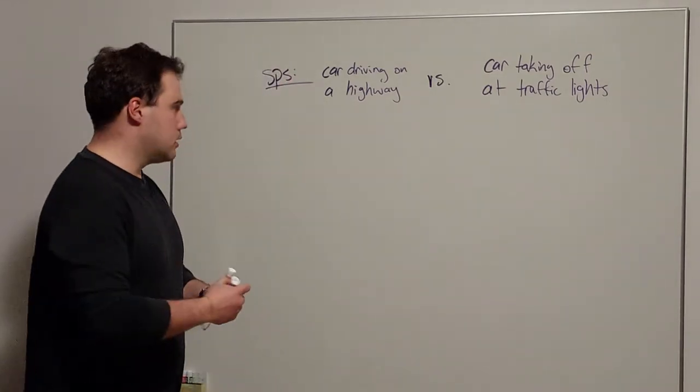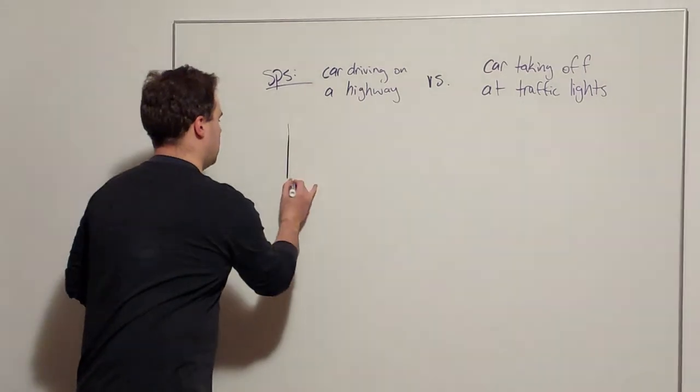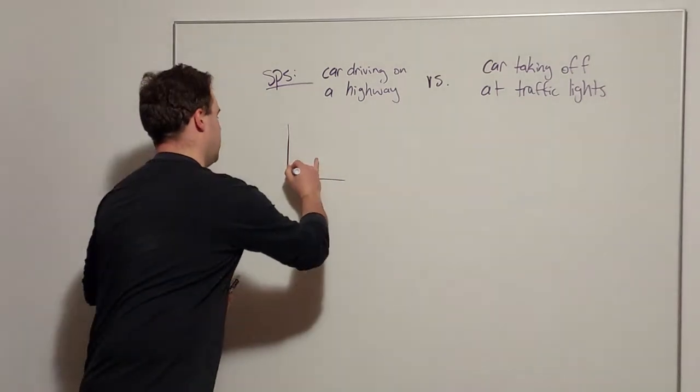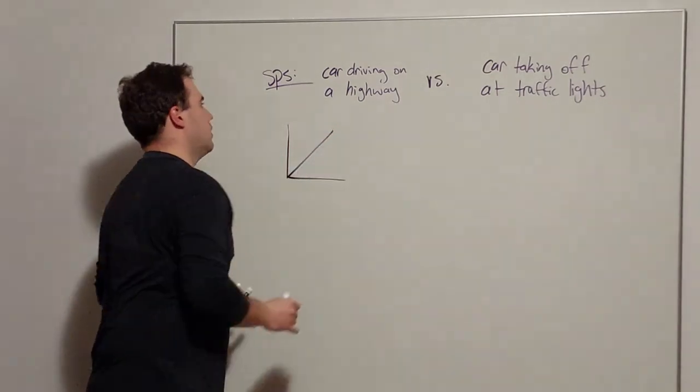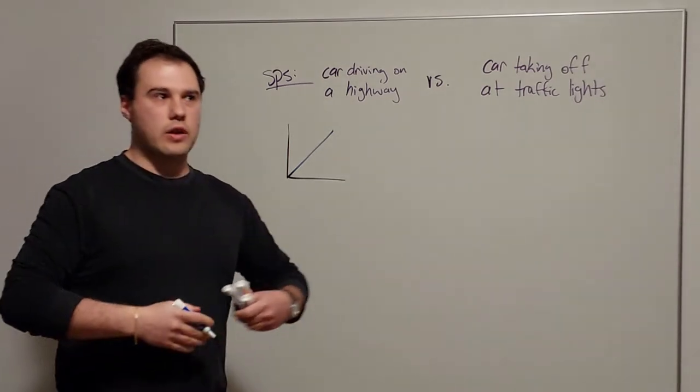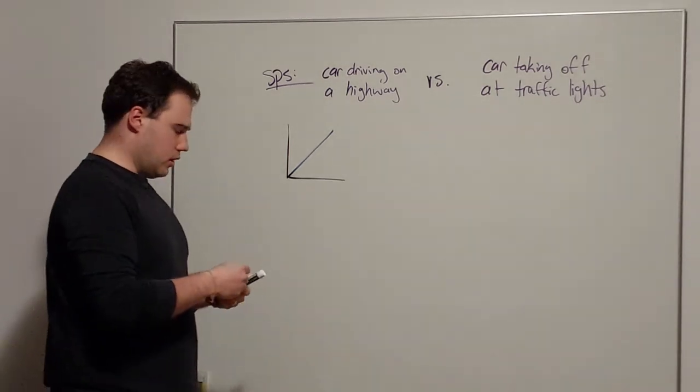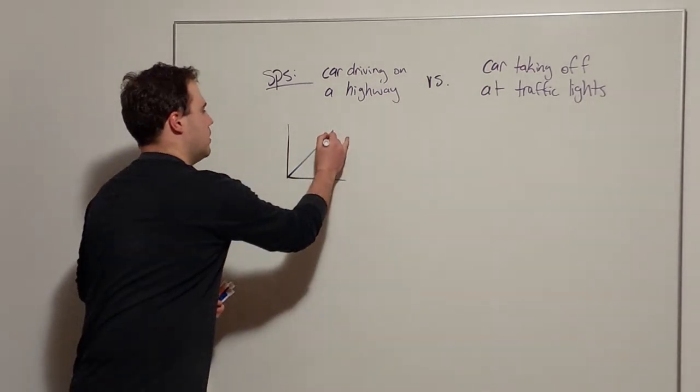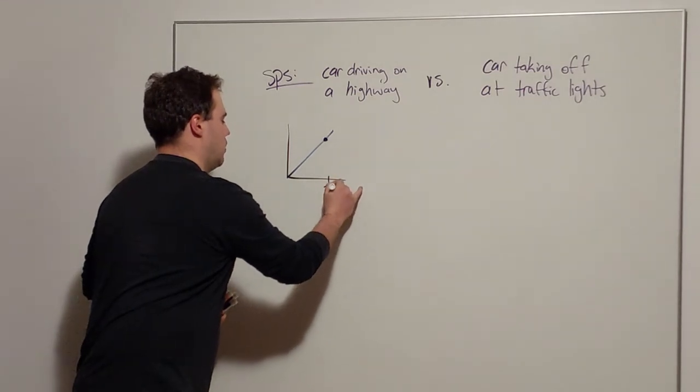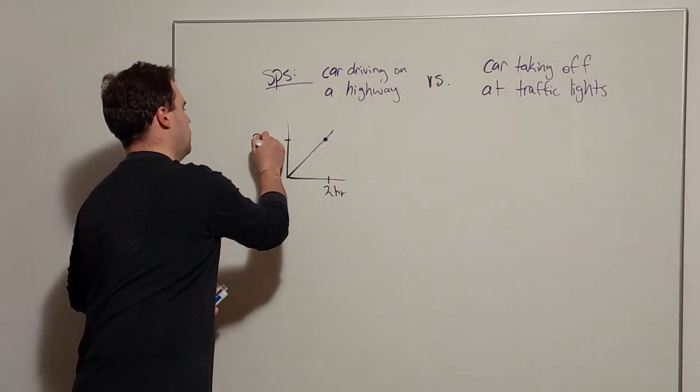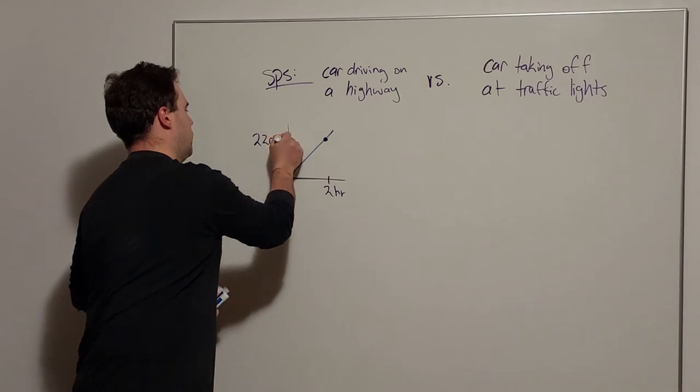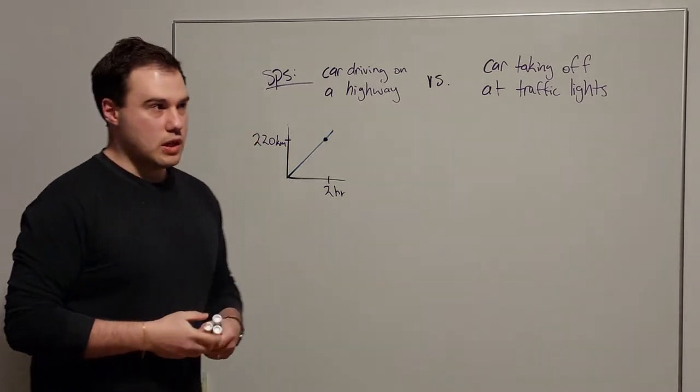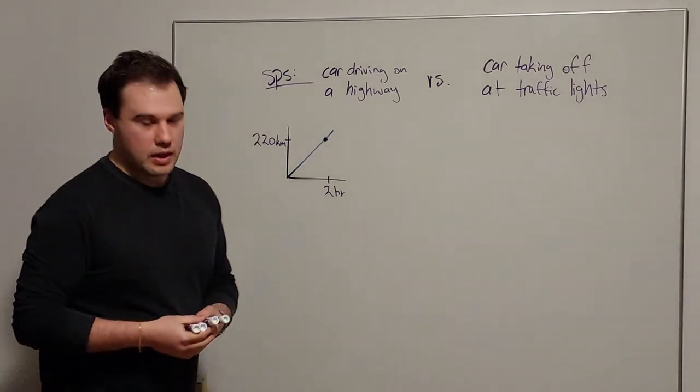Alright, so let's think of what each of these contexts might look like graphically. So here we have a distance versus time graph. For our car driving on the highway at a constant speed, it's going to be a straight line over time where maybe after say two hours it's travelled 220 kilometers. This will be like on an Australian highway where in New South Wales you're going 110 km an hour.